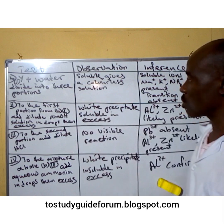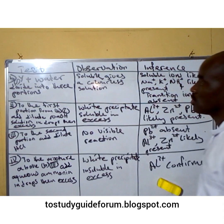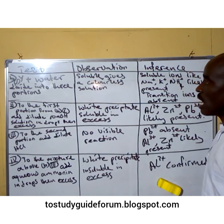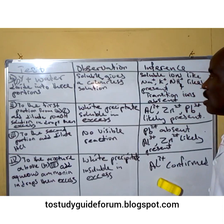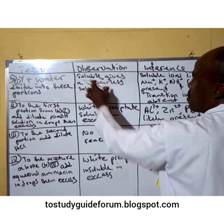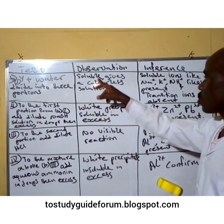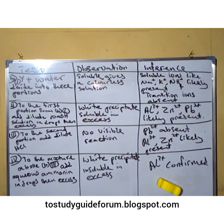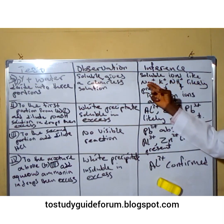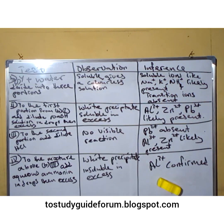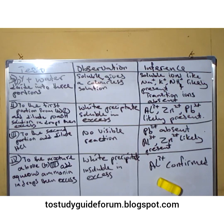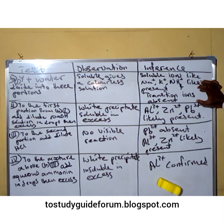The solubility test is done by adding distilled water to it. When you add distilled water, we observe that the salt or compound is soluble and gives a colorless solution. Since it gives a soluble and colorless solution, it means soluble ions like sodium, potassium, and ammonia ions are likely to be present. Since it's colorless, it also means that transition ions are all absent, because most transition ions are known to produce colored ions when dissolved in water due to their d-group orbitals.